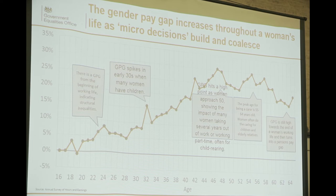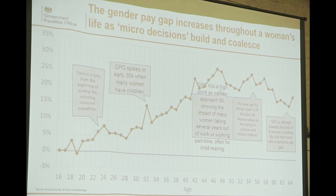Decisions about who will undertake childcare roles are often based on maternity packages and cultural expectations. The peak age of being a carer is 55 to 64 years old, with three in five adult carers aged 45 and older. And a big issue occurs when women approach retirement — sadly, one in two marriages end in divorce, and often with decisions having been taken about where the woman takes time out for caring responsibilities for children or elderly relatives, women approaching retirement are significantly disadvantaged.